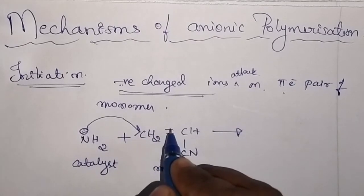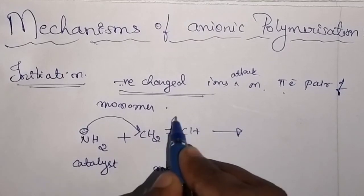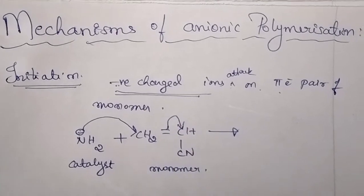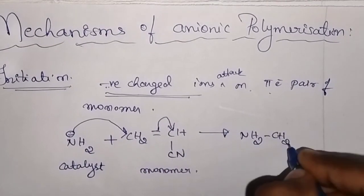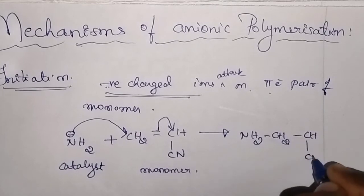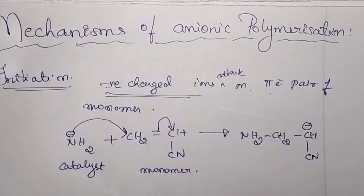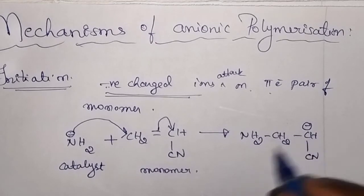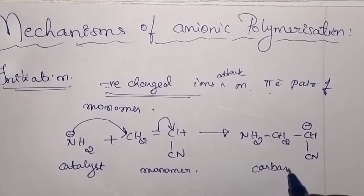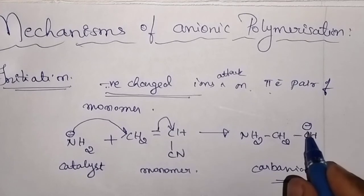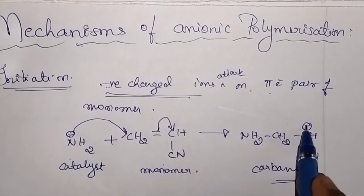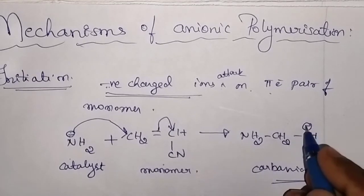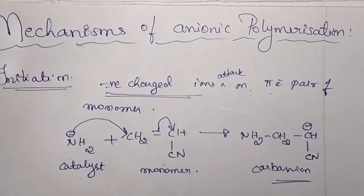And as a result, the pi bond will shift to this carbon. You will get NH2CH2CH2⁻CHCN, and over this carbon you have a negative charge. Now you can see that a carbanion has been generated by the attack of the catalyst over the monomer. This negatively charged carbon is generated, and this is what happens in the initiation step.